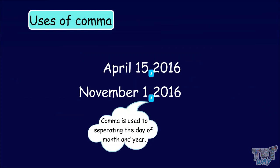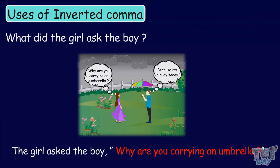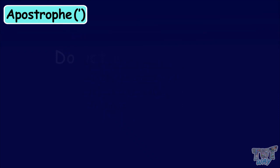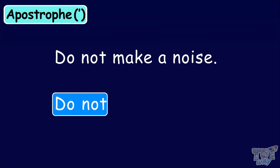Apostrophe is used to indicate the omission of a letter or more than one letters. For example, 'Do not make a noise.' Here, we can make a short form of 'do not'. And for that, we can omit the 'o' of 'not' and use an apostrophe in its place. So, the sentence will become, 'Don't make a noise.'